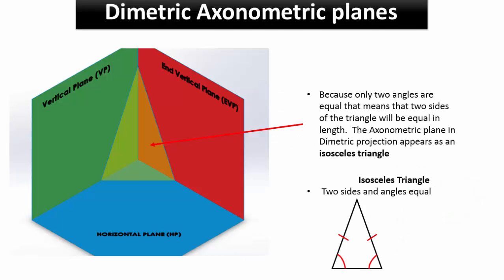Because only two angles are equal, the axonometric plane in dimetric projection appears as an isosceles triangle.